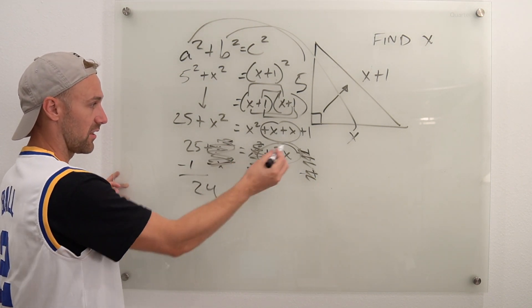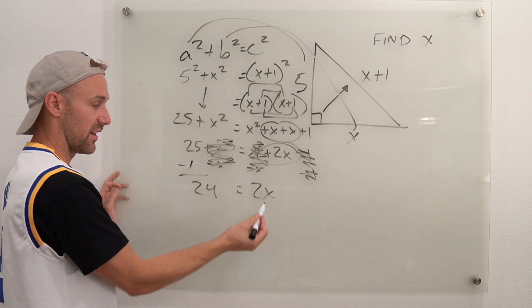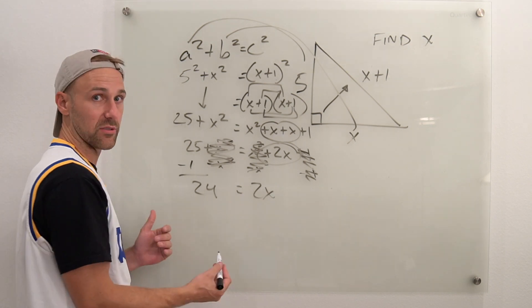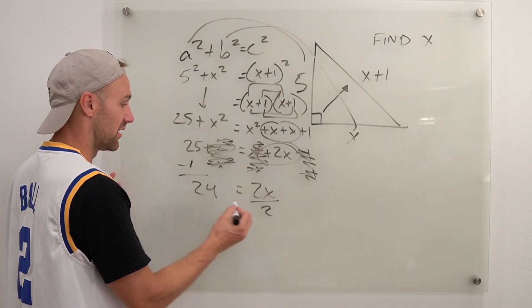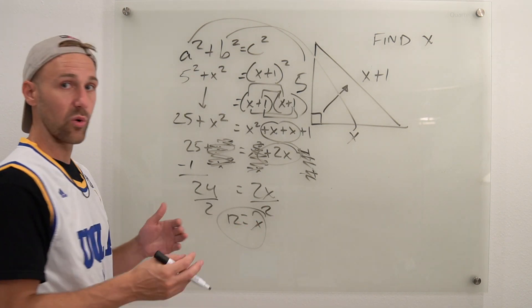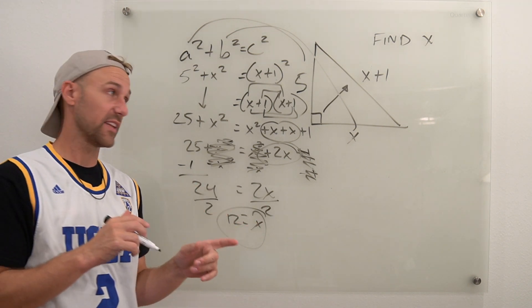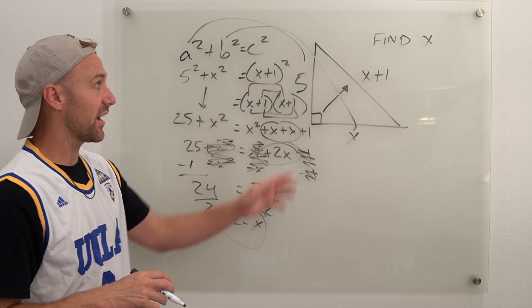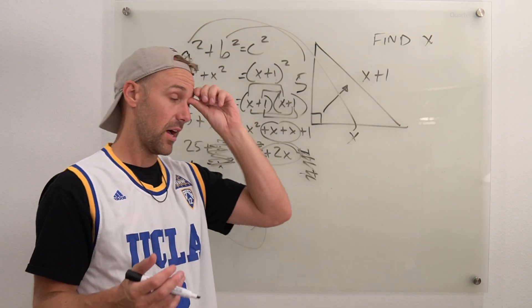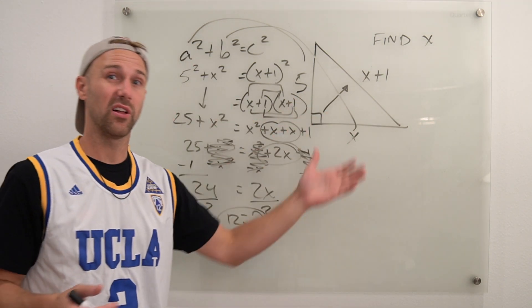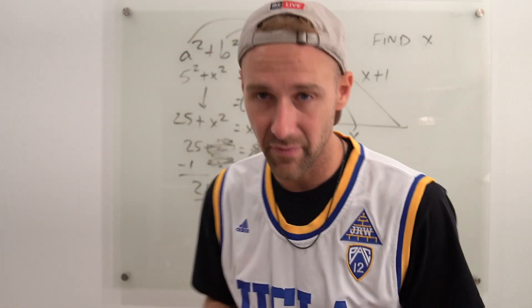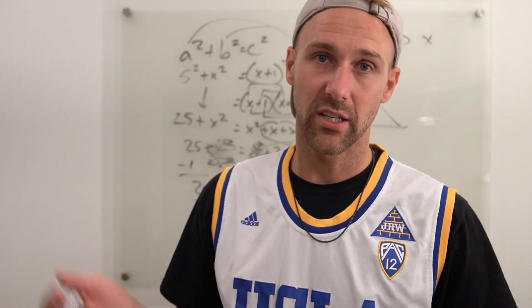Now, the only thing I got to do is get rid of that 2, and you do the opposite to get rid of it, so it's being multiplied, so we do the opposite, which is divide, and x equals 12. So we didn't have two answers. We have one answer, and you can plug it in to check. You can plug that in there. That'd be 5, that'd be 12, and that would be 12 plus 1, just 13, and then you could actually plug those numbers in to the Pythagorean Theorem and see if it works. It's a great way to check it, but I think we did, right?